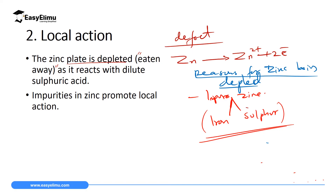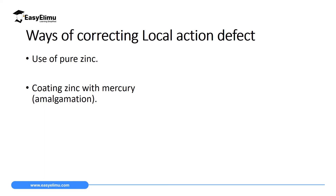To solve local action, we use pure zinc, since local action takes place because zinc has iron and sulfur impurities that react with the acid and cause depletion. If you don't have pure zinc, you can take impure zinc and coat it with mercury in a process called amalgamation.